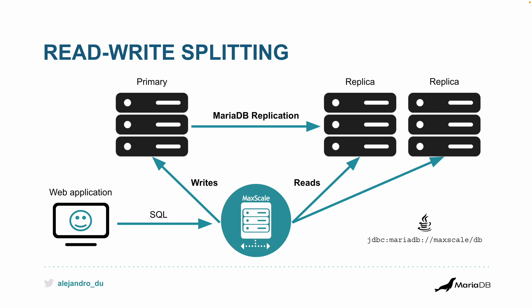The application just notices that for some reason it can perform reads faster. It's also more resilient — if a replica fails, you can still read the data. This is what you gain with this topology.